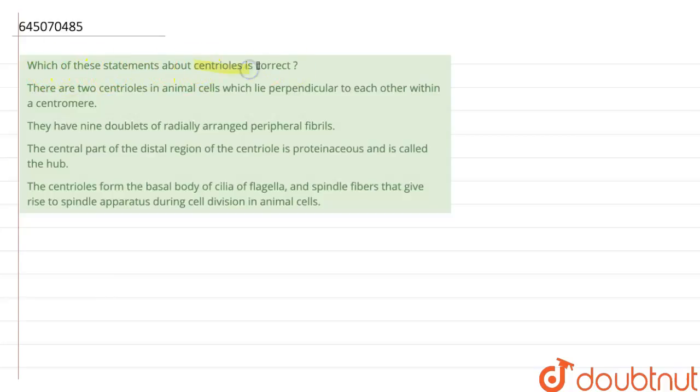Which of these statements about centrioles is correct? The first statement given here is: there are two centrioles in animal cells which lie perpendicular to each other within a centromere. The centrioles are made up of protein tubulin and they lie perpendicular to each other, but they are present in the centrosome.